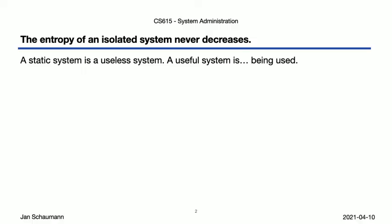As much as system administrators like to joke that users are the cause of all the problems, it's important to remember that the systems we manage are intended to fulfill a specific purpose — to be useful. In order to be useful, they must be used, which in turn means that they are not static. Files are created, modified or removed; users log in and run commands; services are started or terminated. In addition, the requirements of the systems, dictated at least in part by evolving business needs or emerging technologies, are changing all too frequently as well.